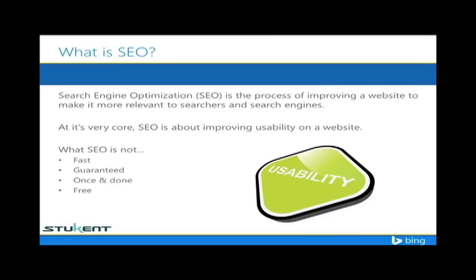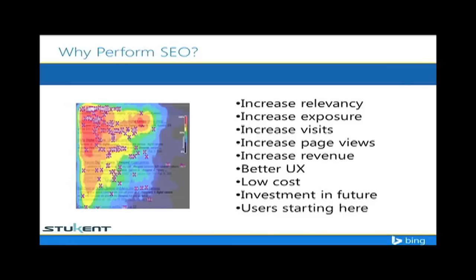SEO is literally the process of improving a website to make it more relevant to searchers and search engines. At its very core, SEO is about usability — building a better product. It is not fast, not guaranteed, not once and done, and by no means free. It takes a lot of time. Search engine optimization should be focused on building a better product for the visitor, the searcher, and the human being exploring your content trying to find the answer to their question. Don't think of SEO purely as how many characters go in a title tag — those things matter but there's so much more to focus on first.